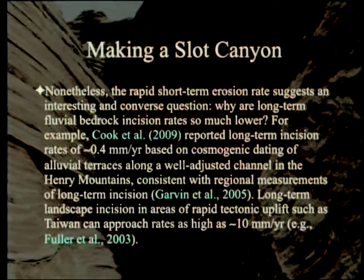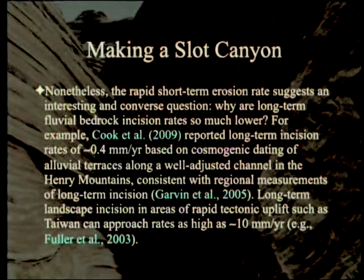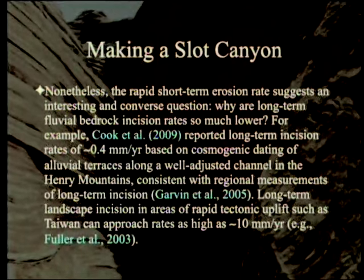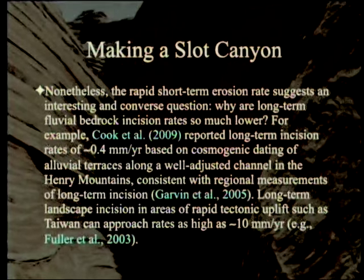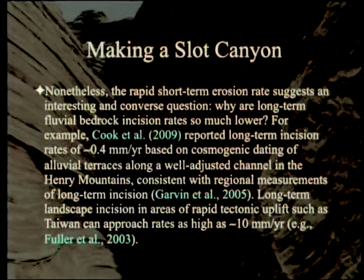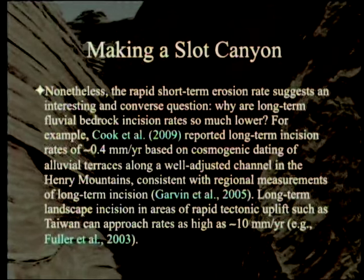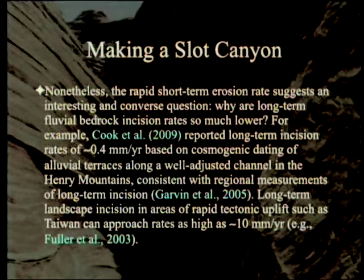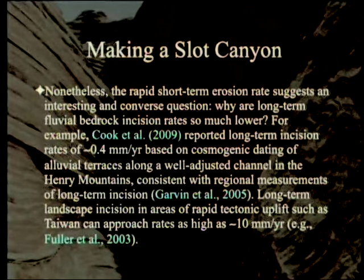Nonetheless, the rapid short-term erosion rate raises an interesting converse question: why are long-term fluvial bedrock incision rates so much lower? Cook et al. reported long-term incision rates of 0.4 millimeters per year based on cosmogenic radionuclide dating of alluvial terraces along a well-adjusted channel in the Henry Mountains, consistent with regional measurements of long-term incision. Long-term landscape incision in areas of rapid tectonic uplift such as Taiwan can approach rates as high as 10 millimeters per year. Meanwhile, they're measuring 500 millimeters in 23 days.